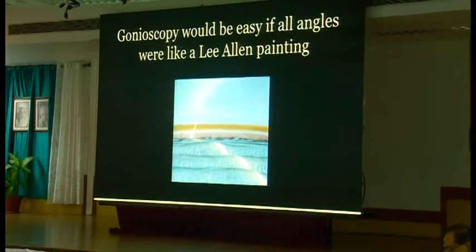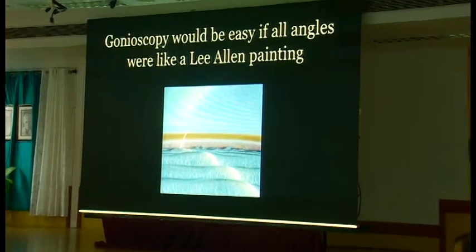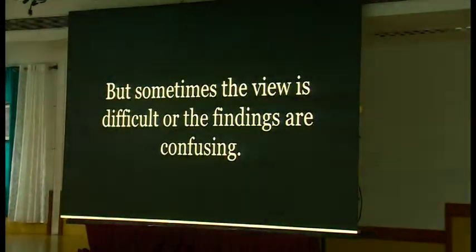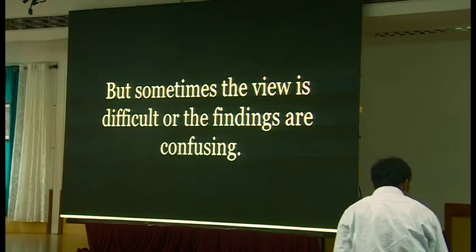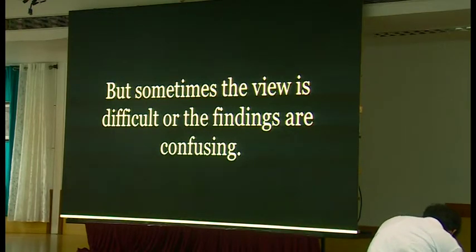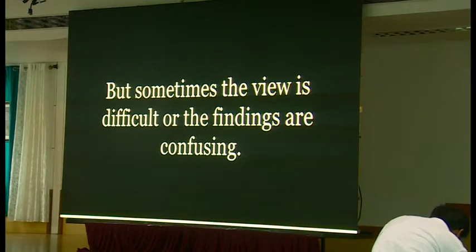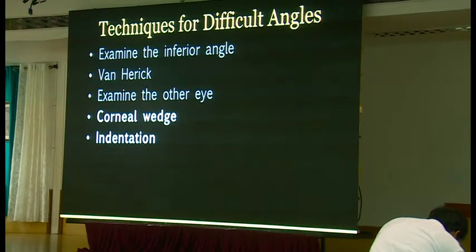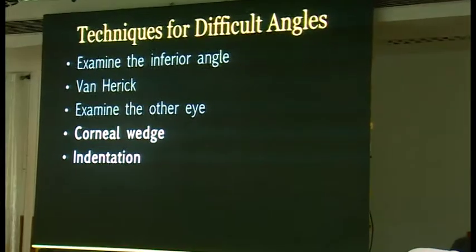Life would be easy if you had a painting that showed you where all the structures were, everything nicely pigmented. But a lot of times everything is confusing. What I'd like to do is talk about ways you can help yourself if you're looking at an eye and you can't tell if the angle is completely open but not pigmented, or if the angle is closed. There are five things I like to do for confusing eyes, all on my website. For the sake of time, I'm going to talk about two things: corneal wedge and indentation.